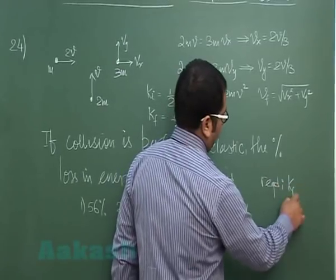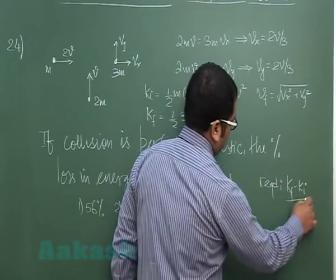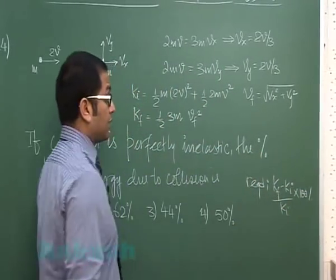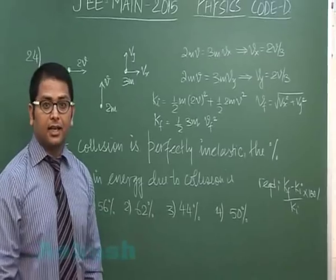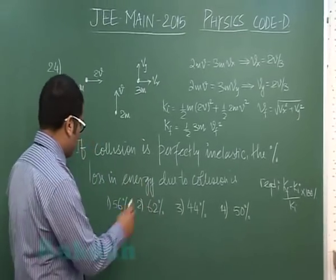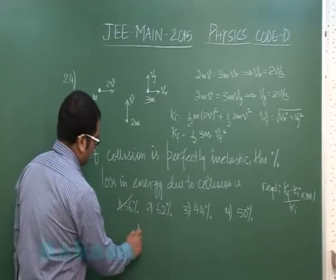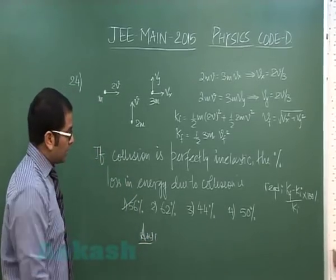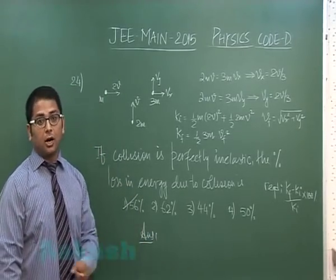This would give you a negative value, and that of course signifies the kinetic energy is lost, and that will lead you to option number 1. So the solution for question number 24 comes out to be the first option.